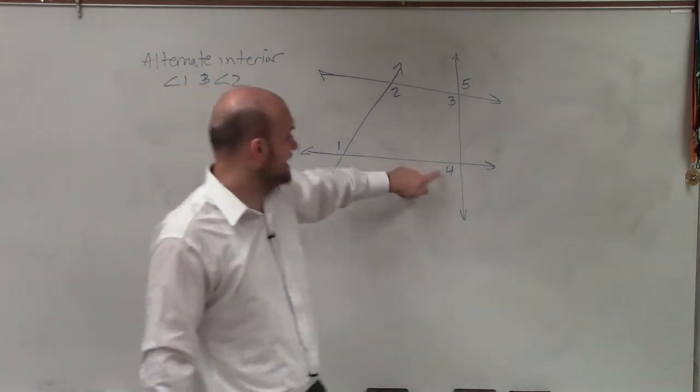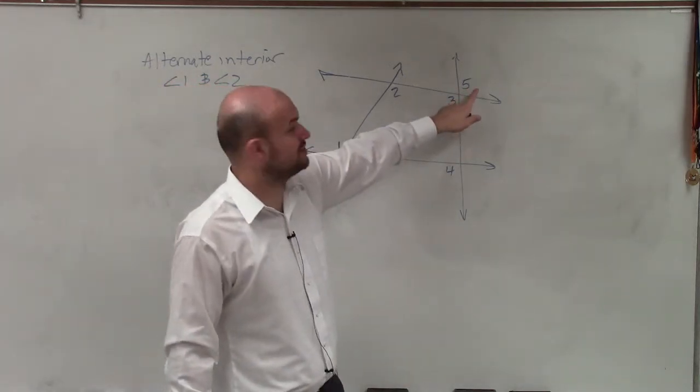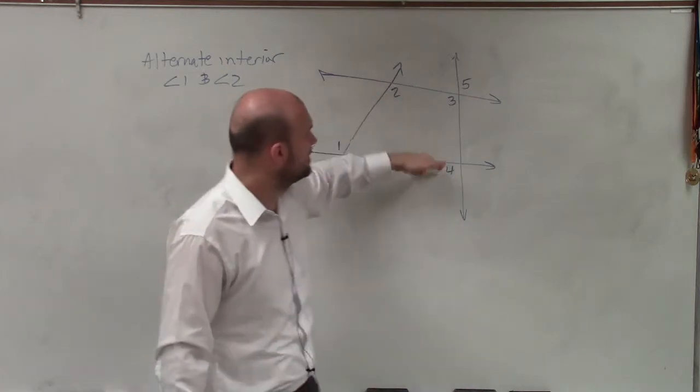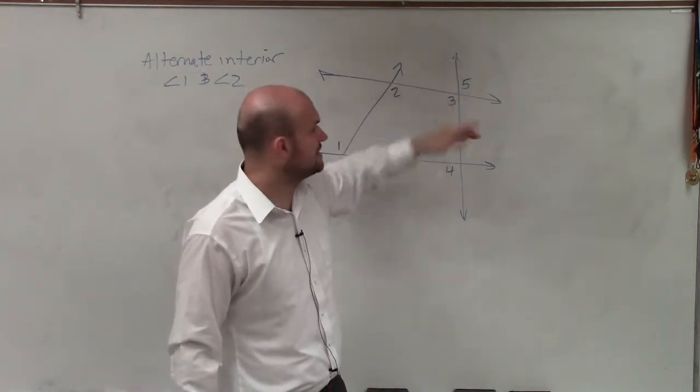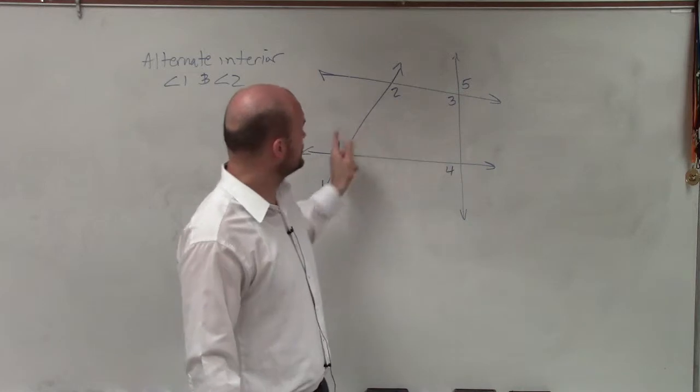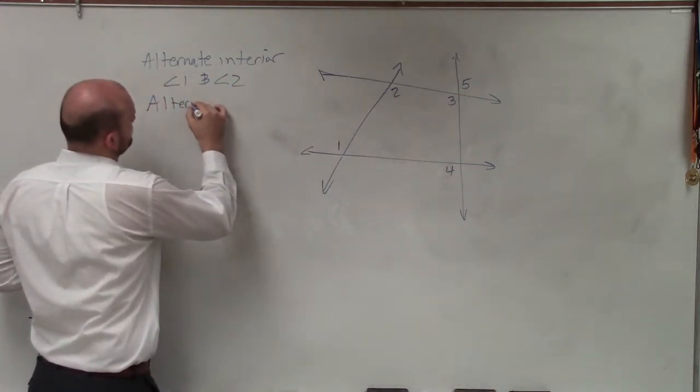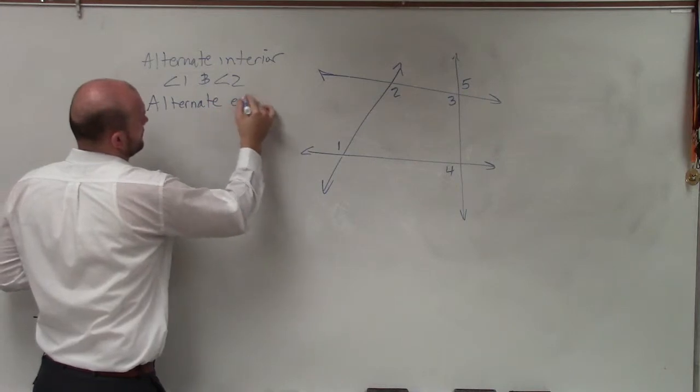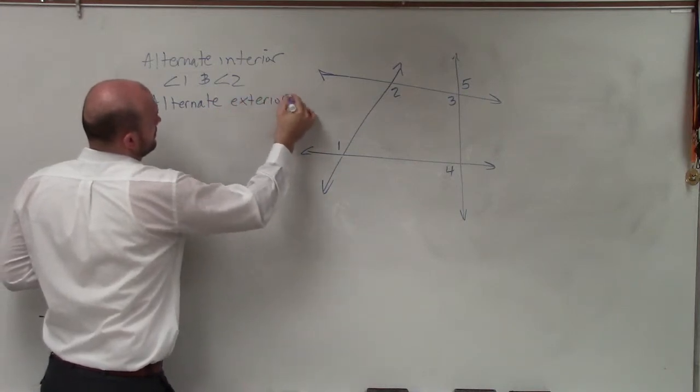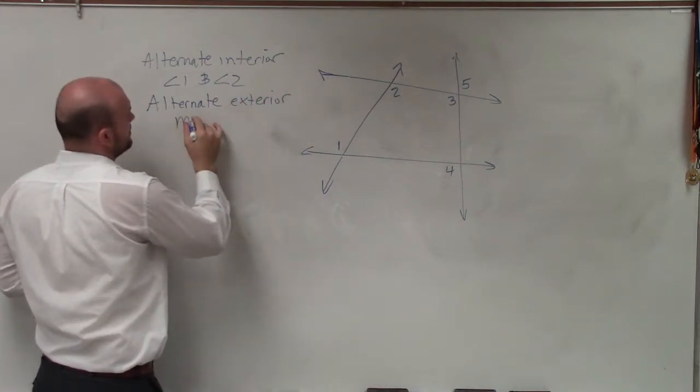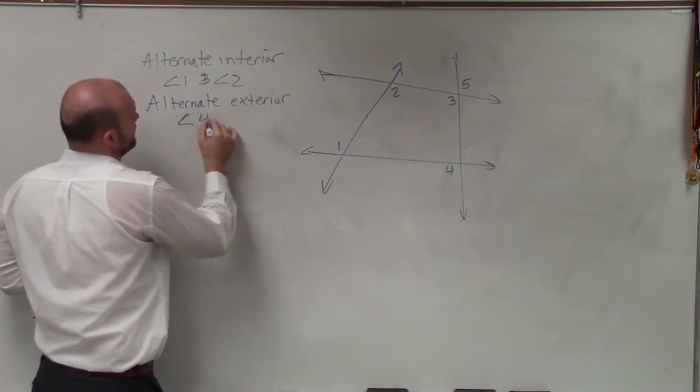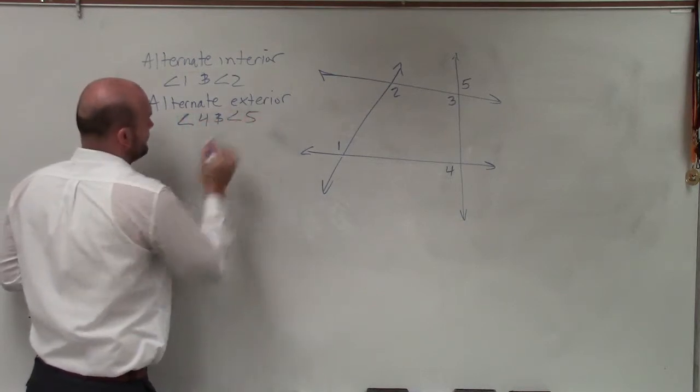Angle four is exterior. Angle five is exterior as well. Where one and two were interior, these two are exterior of the two lines, and they are also alternating just like these two. So our alternate exterior would be angle four and angle five.